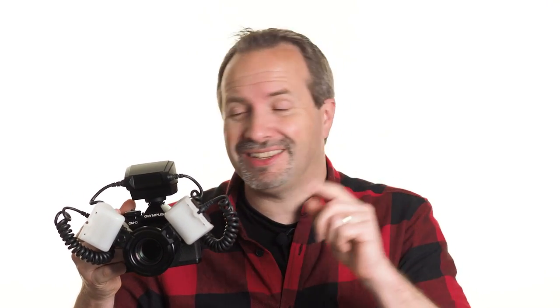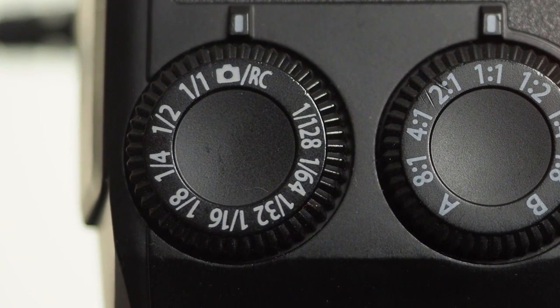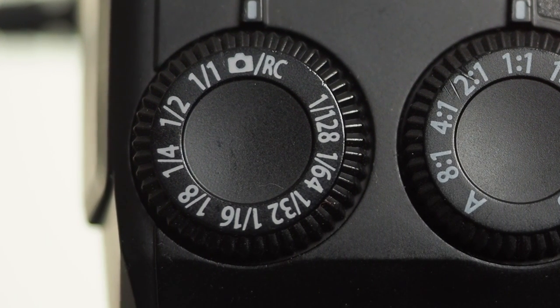The simplest way of using the Olympus STF-8 twin flash is in its TTL mode. To get to that simply go to the left dial and turn it all the way anti-clockwise as far as you can until you get to the little camera icon.